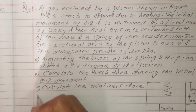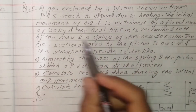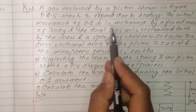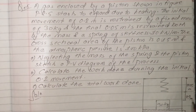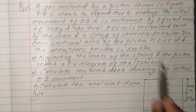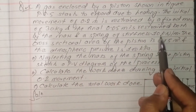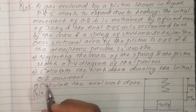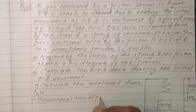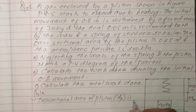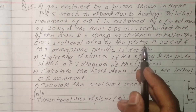In the given figure, a gas enclosed by a piston starts to expand due to heating. The initial moment is restricted by a fixed mass of 30 kg with a piston position of 0.2 meters. The final state at 0.05 is restricted by both the mass and the spring. Spring constant K = 10 kilo Newton per meter. Cross-sectional area of piston A_p = 0.15 meter square.